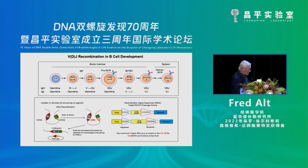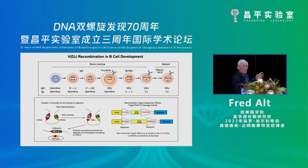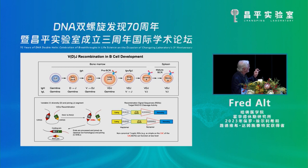Decades ago, Susumu Tonegawa and others discovered the VDJ recombination reaction, and over the years we've learned quite a bit about it. For many years, up until recently, we tended to think of it in a simple way from a diagram where V, D, and J segments are flanked by triangles — recombination signal sequences — which play a very important part in what I want to talk about.